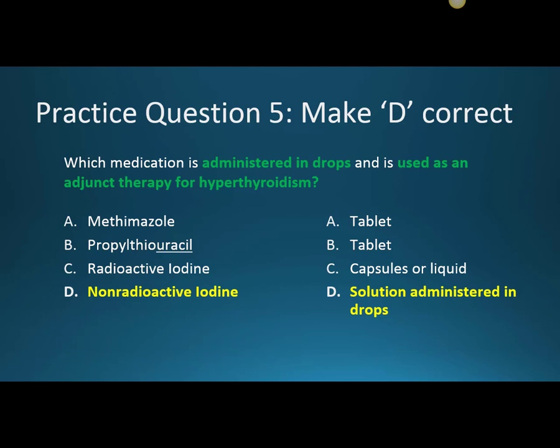The last question discusses non-radioactive iodine: which medication is administered in drops and used as adjunct therapy for hyperthyroidism? Methimazole and propylthiouracil are both tablets and are mainstay therapies. Radioactive iodine comes in capsule or liquid form and is also a mainstay therapy. Non-radioactive iodine (Lugol's solution) is a solution administered in drops, but it is an adjunct therapy — commonly used in the period leading up to surgical removal of the thyroid gland.